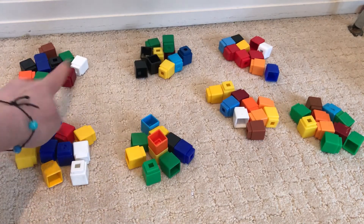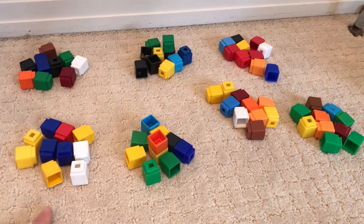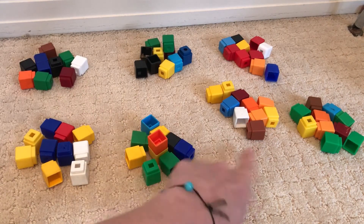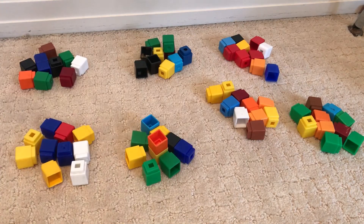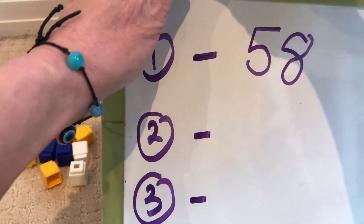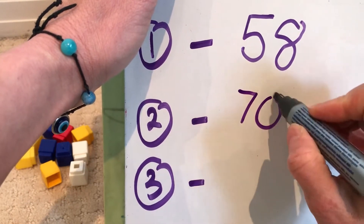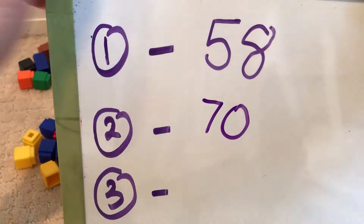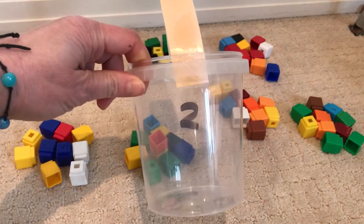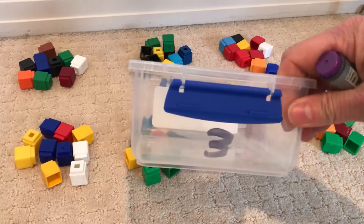1 ten, 2 tens, 3 tens, 4 tens, 5 tens, 6 tens, 7 tens. So 7 tens means 70 blocks fit into container 2. Now let me try container 3.